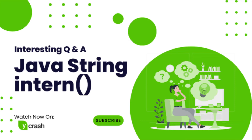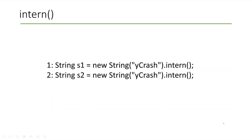So when you invoke the intern function, it eliminates the duplicate strings. Let me explain how it works. I write a code like this — this is hypothetical code just to demonstrate how the intern function works. Here I am creating a new String object 'ycrash', and then invoking the intern function, and the result is assigned to the variable s1.